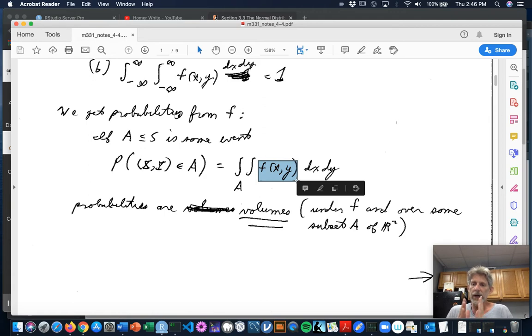So with one random variable, probabilities are areas underneath a density function down to the horizontal axis. In bivariate situation, probabilities are volumes underneath the surface that is the graph of the PDF, down to the plane, the x, y plane.